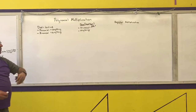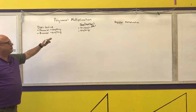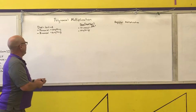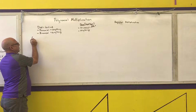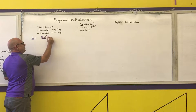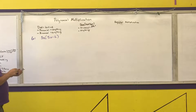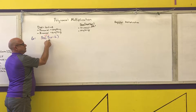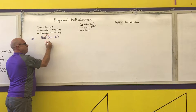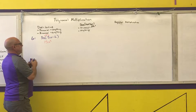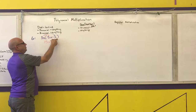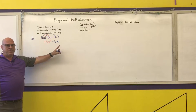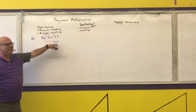I'm going to do a simple monomial times anything to show you the distributive method. So example one: 3x times (5x minus 2). For the distributive method, I prefer that you use arrows to show what you're actually doing. 3x times 5x is 3 times 5, which is 15, and x times x is x squared. Then 3x times negative 2: negative 2 times 3 is negative 6, and don't forget the x. You cannot combine these any further — that's your final answer.